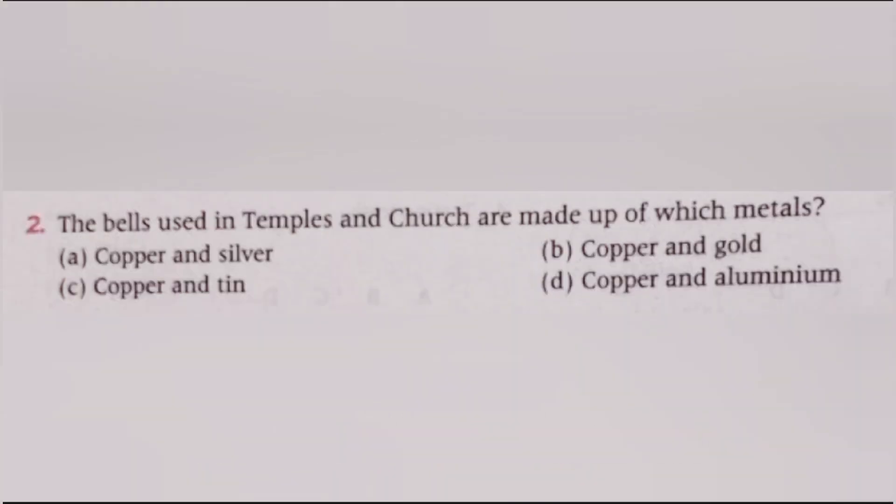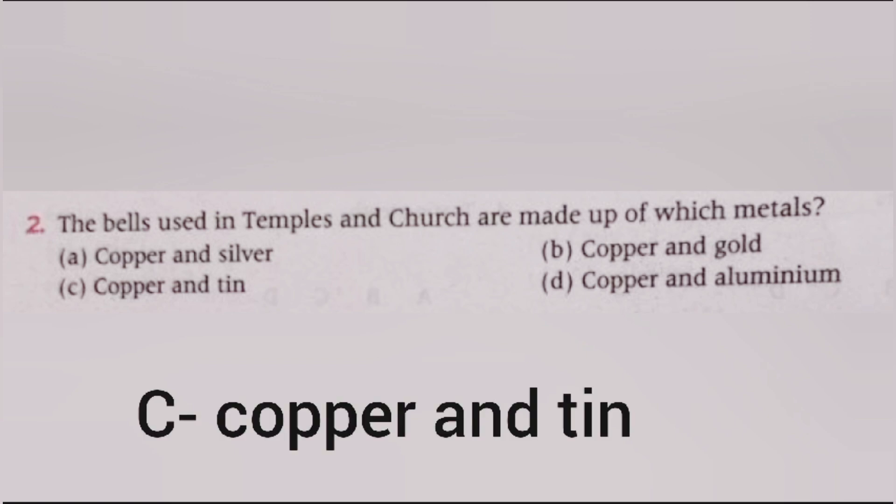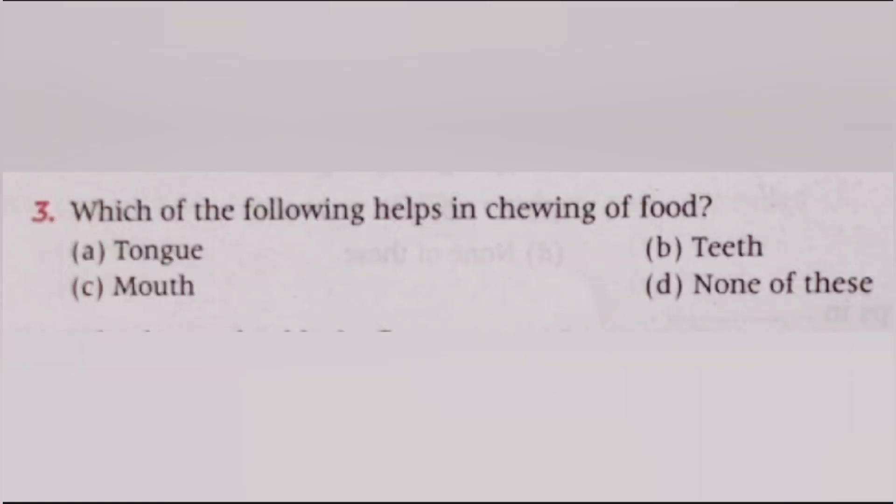Next, the bells used in temples and churches are made of which metals? Copper and silver, copper and gold, copper and tin, copper and aluminum. The answer is C, copper and tin. Next, which of the following helps in the chewing of food? The answer is B, teeth.